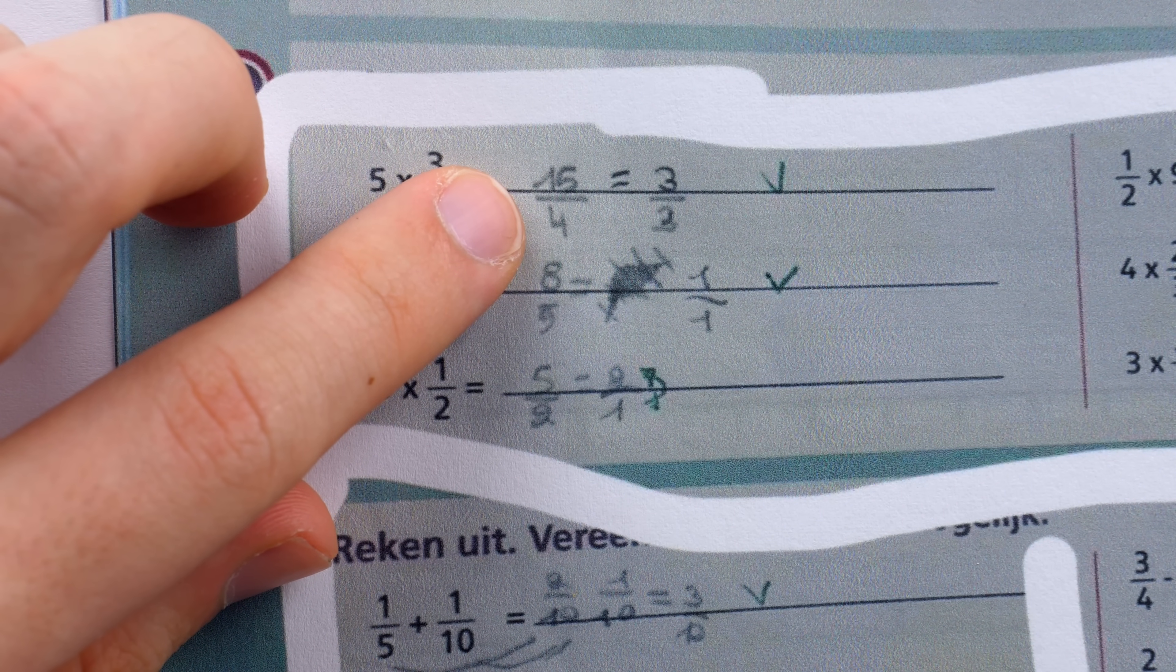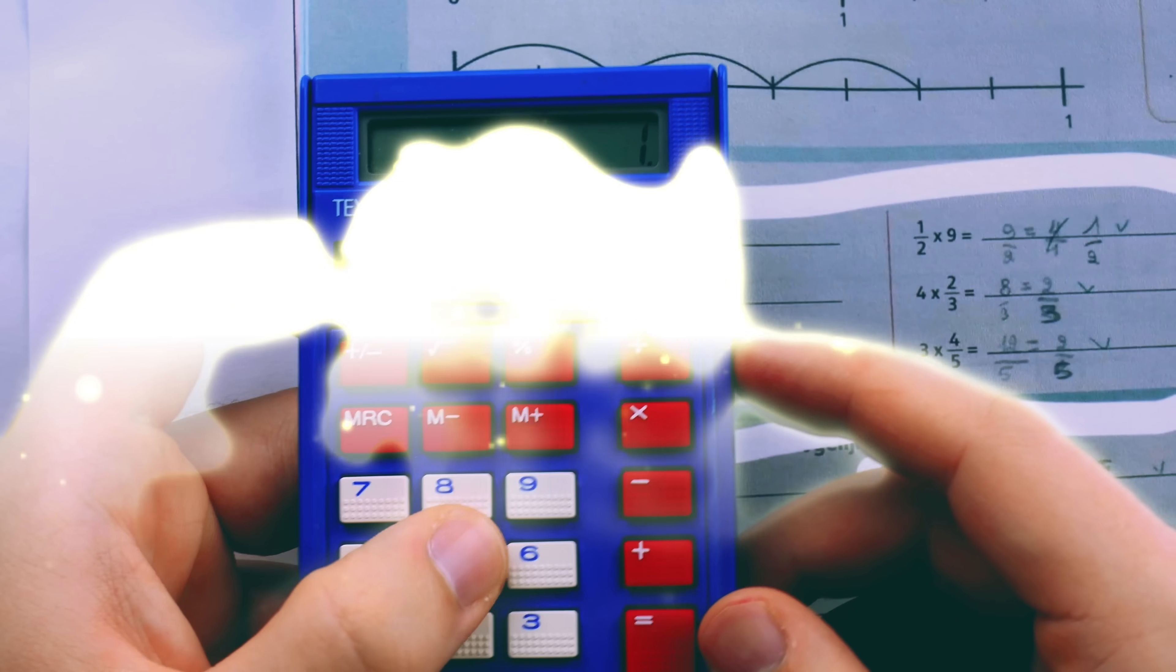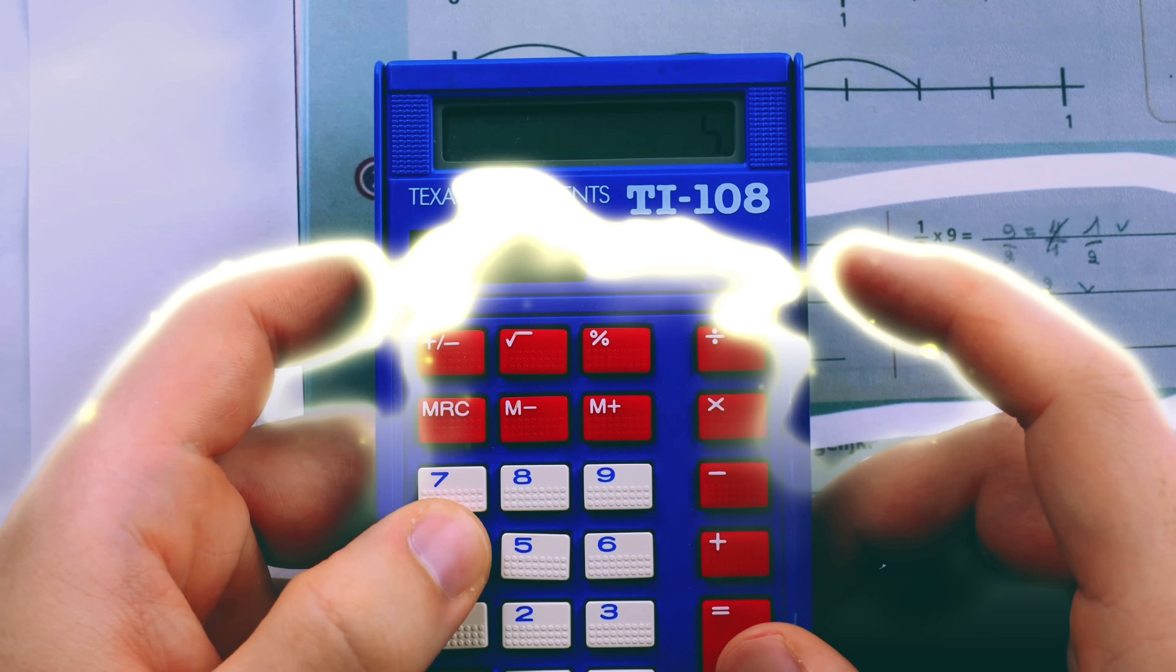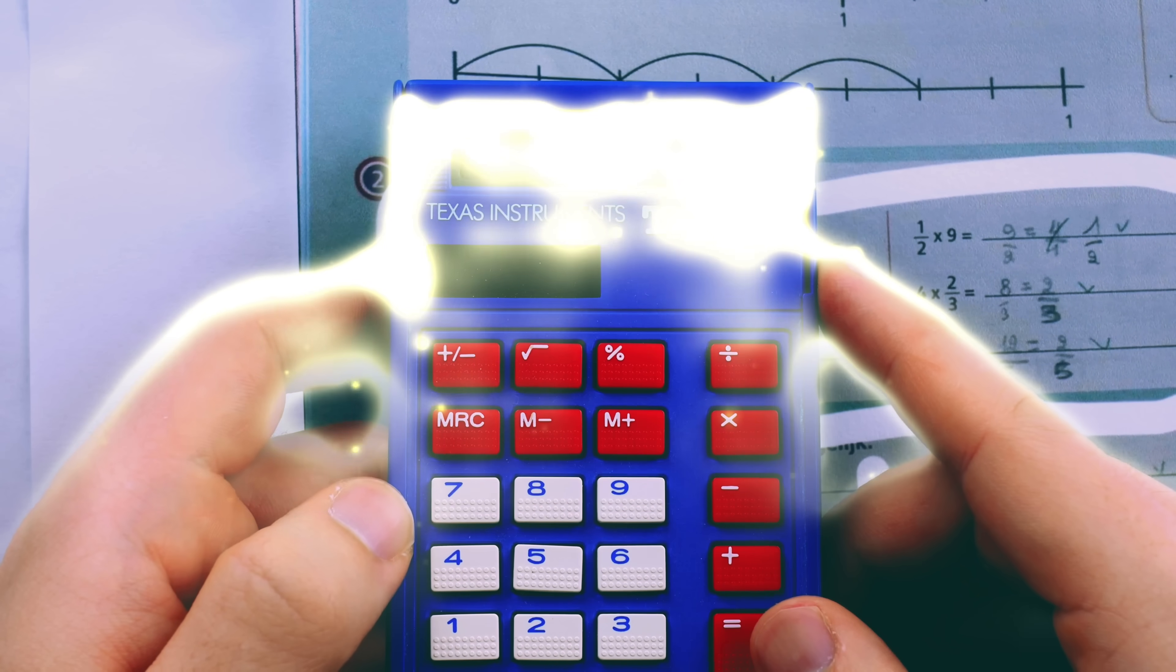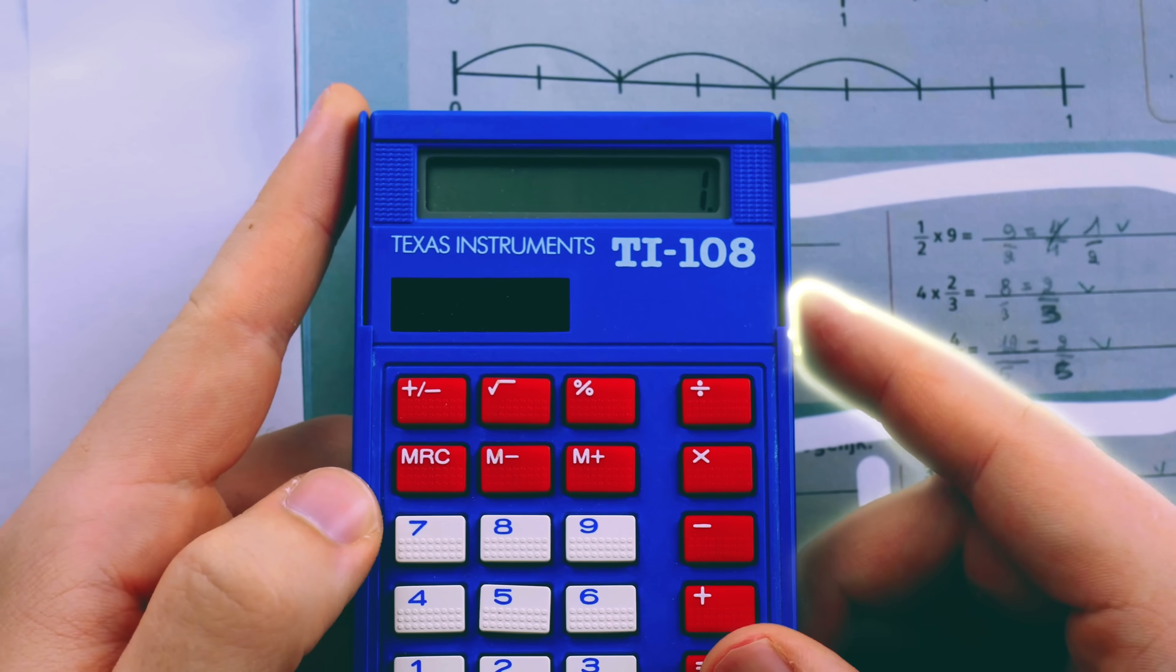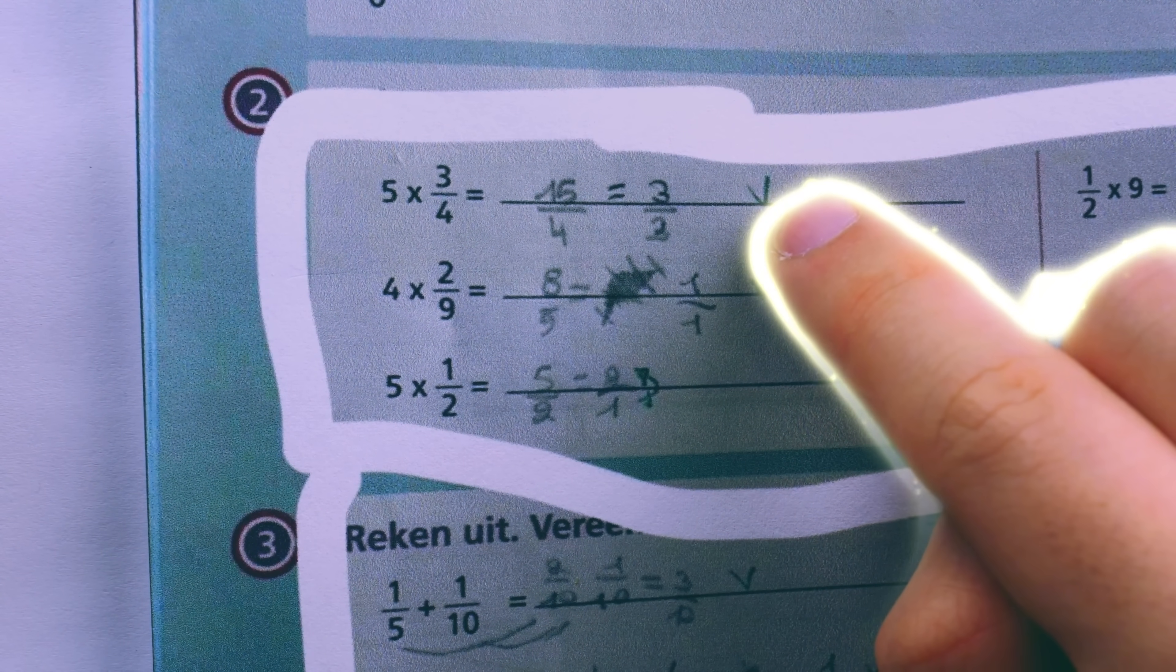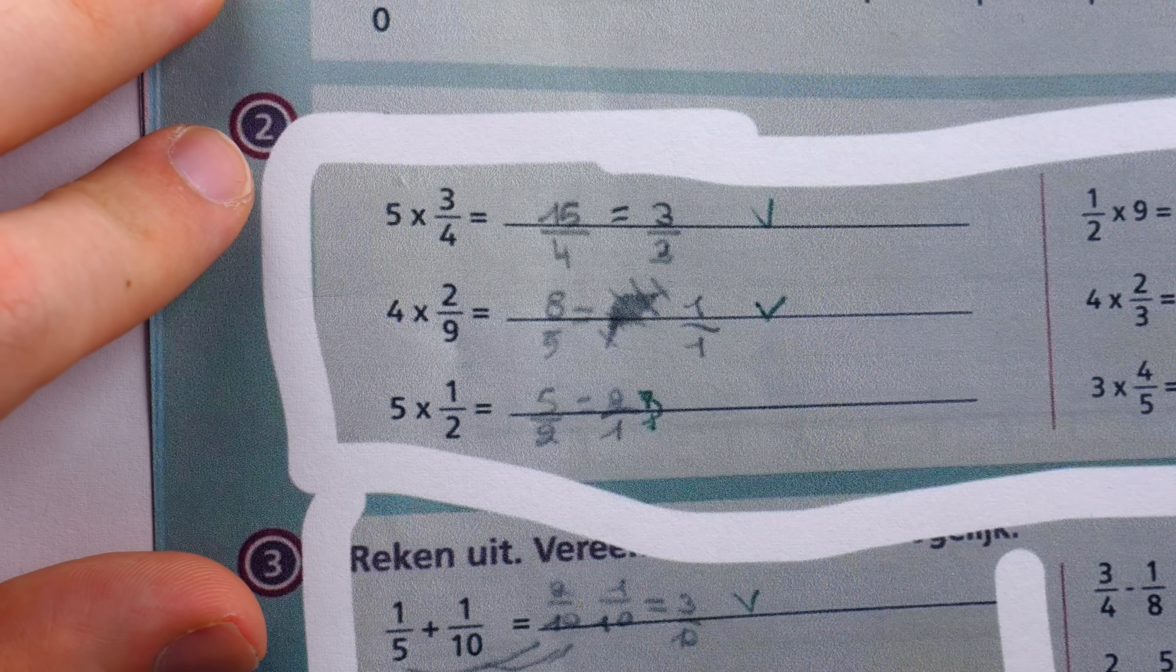If you trust the teacher and not me, let me just use my trusty TI-108 to prove to you that 15 fourths is not the same as 3 over 3. 15 divided by 4 is 3.75. However, 3 divided by 3 is 1. Clearly, this is not correct, but it's been marked as such. And it doesn't appear to get better.